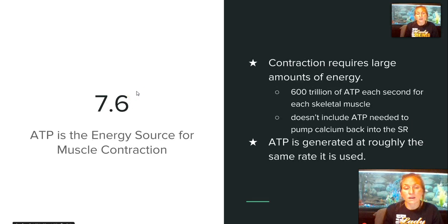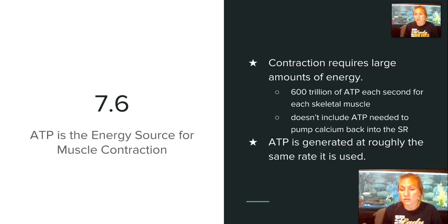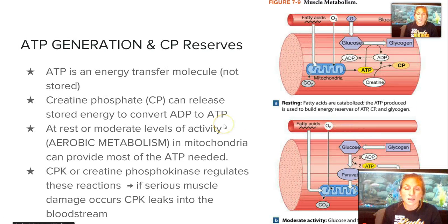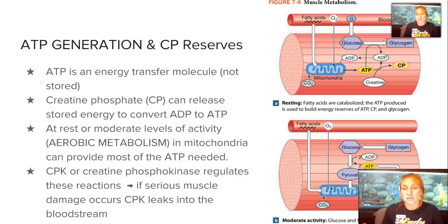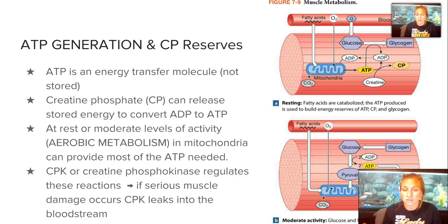ATP is the energy source for muscle contraction, and contraction requires large amounts — roughly 600 trillion molecules of ATP each second for skeletal muscle, not including ATP needed to pump calcium back into the sarcoplasmic reticulum. ATP is generated at roughly the same rate it is used, primarily through aerobic metabolism. ATP is an energy transfer molecule; it isn't stored. Creatine phosphate can release stored energy to convert ADP to ATP. CPK, or creatine phosphokinase, regulates these reactions. However, if there is serious muscle damage, CPK can be found in blood test results because it leaks into the bloodstream during that damaged state.